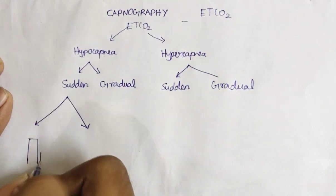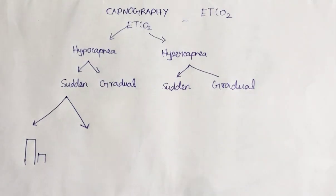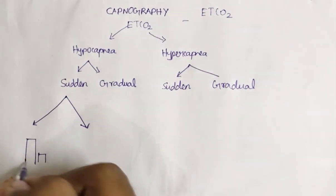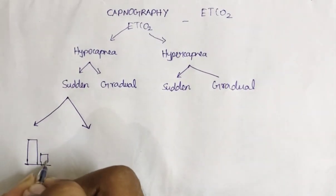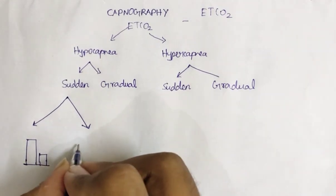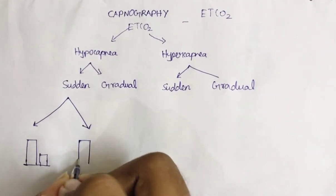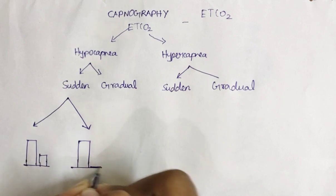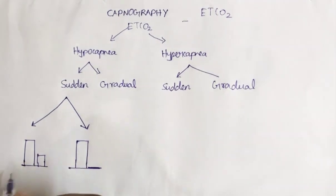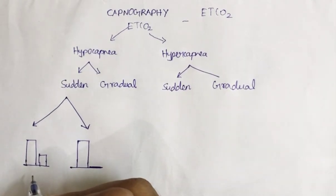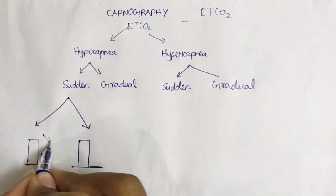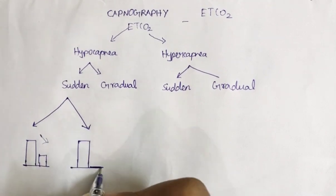Suddenly if EtCO2 is coming like this, or it has the possibility of coming to zero point. It stops here. There are two possibilities in sudden hypocapnia: it decreases to a certain point or it can become zero.